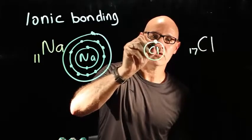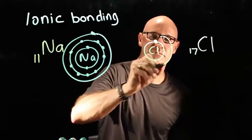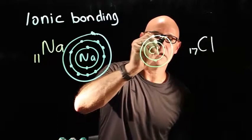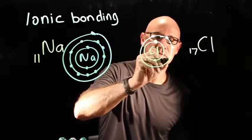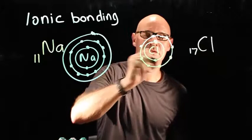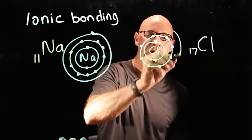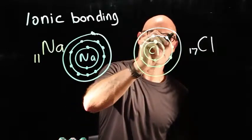It's got 2 electrons in its inner shell. It's got 8 electrons in its next shell. So that gives us 10 electrons, and it's going to have 7 electrons in the next shell.